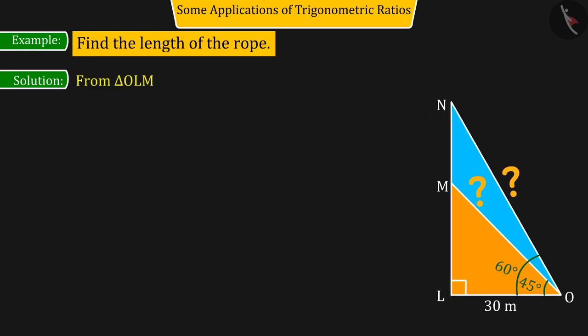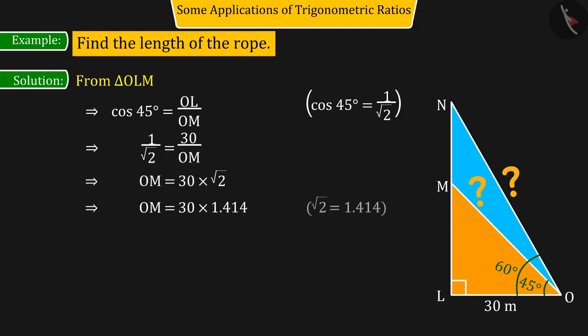Where, using the trigonometric ratio, he gets cos 45 degrees equal to OL upon OM. On substituting and solving these values, the value of OM is found to be 42.42 meters.